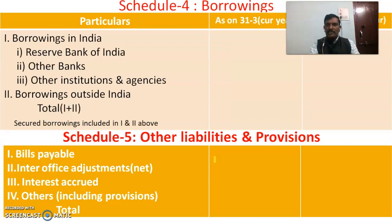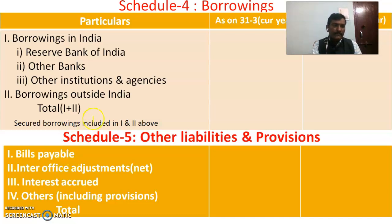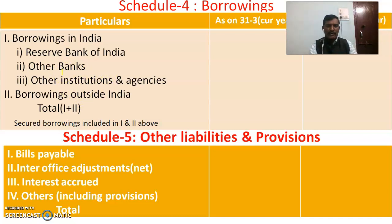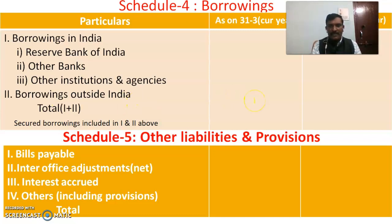Schedule 4 relates to Borrowings, where borrowings in India and borrowings outside India are to be taken. Borrowings in India include borrowings from the Reserve Bank of India, borrowings from other banks, and borrowings from other institutions and agencies. Borrowings outside India are also taken, and any secured borrowings included in items 1 and 2 above are to be noted.